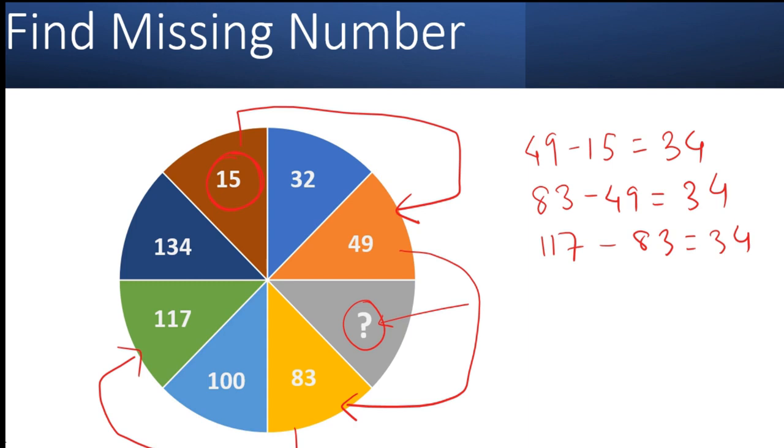Same for 32. If you see whatever number here, that number minus 32 should be 34. So that number would be 34 plus 32, that is 66. So let's fill 66 here.